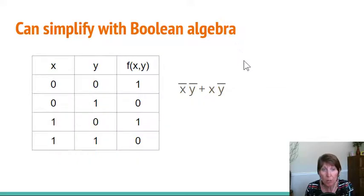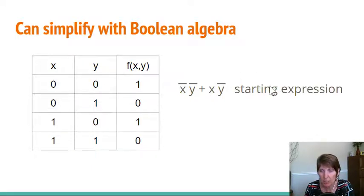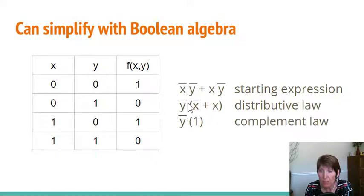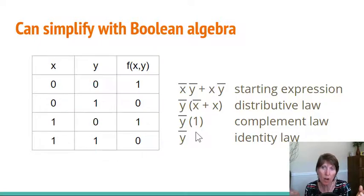Now, it turns out that we could also simplify this expression using Boolean algebra, right? So we can see how that could be done. We could take, here's our starting expression. And then we could use the distributive law to pull that complement of Y out. We could use the complement law, because we have the complement of X plus X, which gives us one. And then we can use the identity law to get all the way to that simple version of the complement of Y. So using the Karnaugh map, we ended up coming up with the same expression that we came up using simplification.